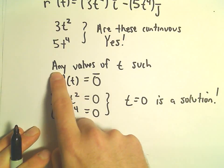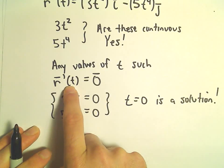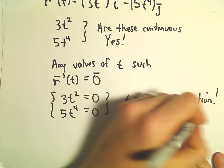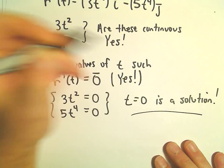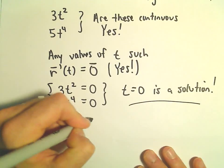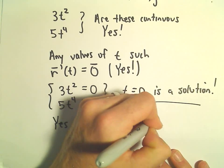So if we ask ourselves, are there any values of t such that the derivative at that value of t equals 0, if the answer is yes, so in this case our answer is yes, that tells us that the curve is not smooth at that point.